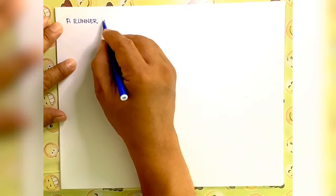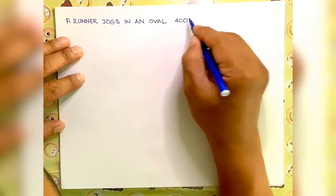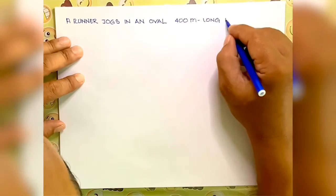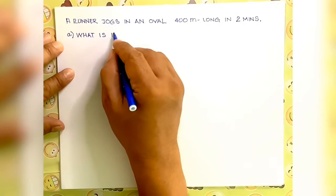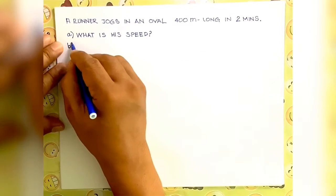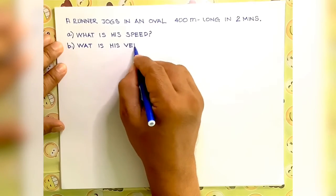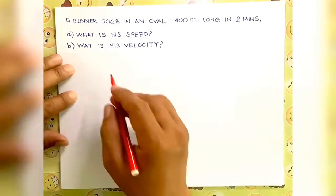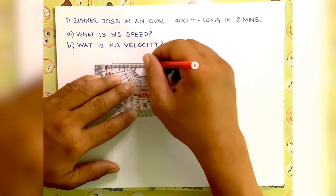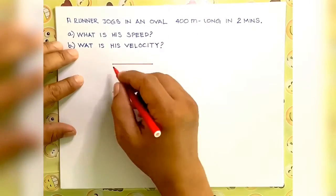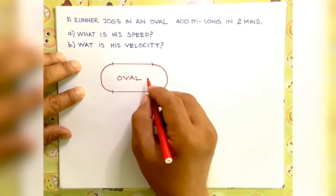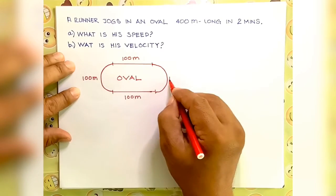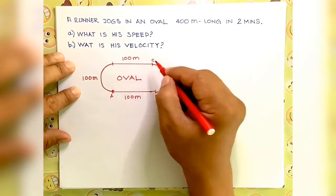We will be making use of an example. A runner jogs in an oval that is 400 meters long in 2 minutes. The questions are: A) what is the jogger's speed, and B) what is the jogger's velocity? An oval has a standard size of 400 meters long. This is the path made by the jogger, and here are the different sections of the oval — each section is 100 meters.